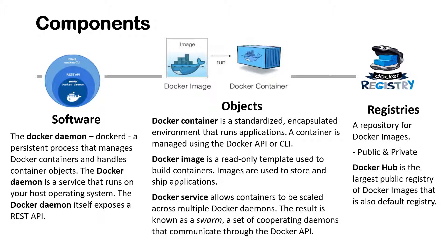Docker containers are a standardized encapsulated environment that runs applications, managed using the Docker API and command line interface. A Docker image is a read-only template used to build containers; images are used to store and ship applications. Docker services allow containers to be scattered across multiple Docker daemons — the result is known as a swarm, a set of cooperating daemons that communicate through the Docker API. Docker registries are repositories for Docker images. Registries can be public or private, and Docker Hub is the largest public registry and also the default registry.